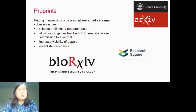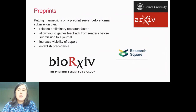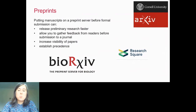Moving on to preprints: these have been common in some fields for some time, especially the physical sciences. More and more preprint servers are becoming available across a variety of fields. Some, such as Research Square, cover all fields, while some are specific to certain disciplines — for example, bioRxiv is specific to biology. Preprints allow authors to share their work prior to formal peer review, and many preprint servers allow readers to comment on posted content, allowing authors to gain feedback before submitting to a journal.